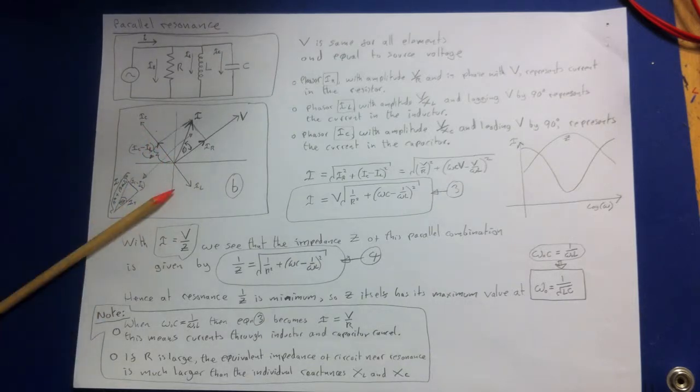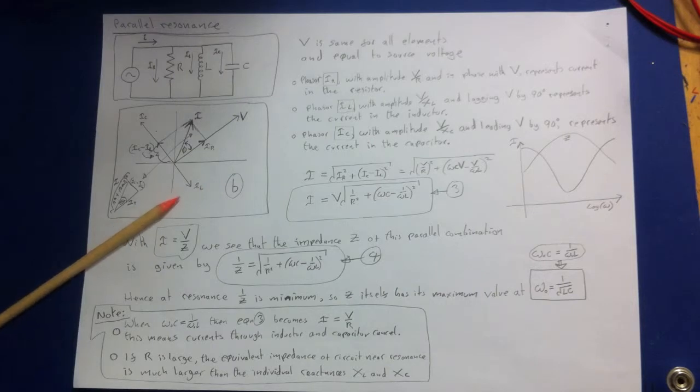So the instantaneous current, lowercase i, by Kirchhoff's point rule, equals the algebraic sum of the instantaneous currents I-R, I-L, and I-C, and is represented by the phasor capital I. So we've got this drawn here.